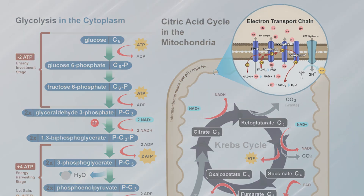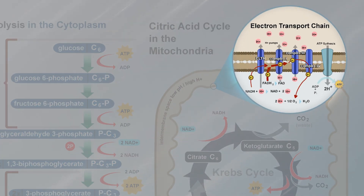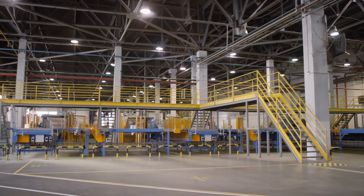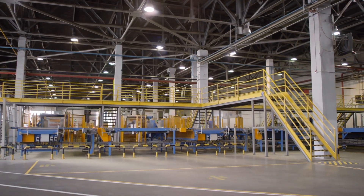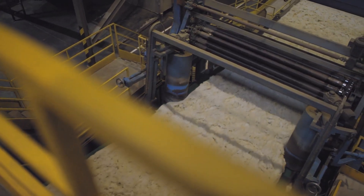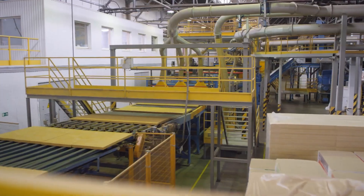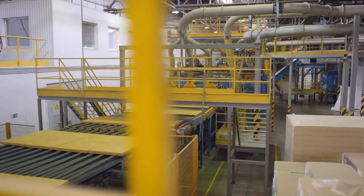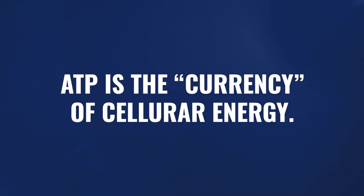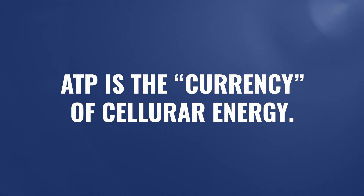The electron transport chain is literally the last few steps of energy production in our cells. Picture it as a factory — you need to deliver raw materials and then process those raw materials in order to make a product. In this case, the product is ATP, which is cellular energy — the currency of cellular energy, and what cells need to do all the different jobs that cells are required to do.